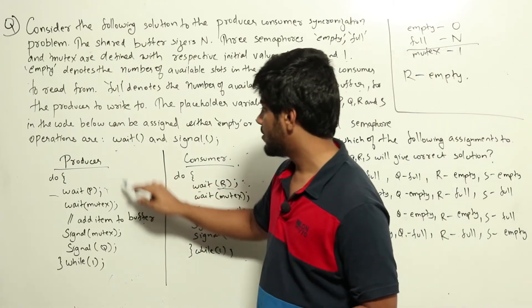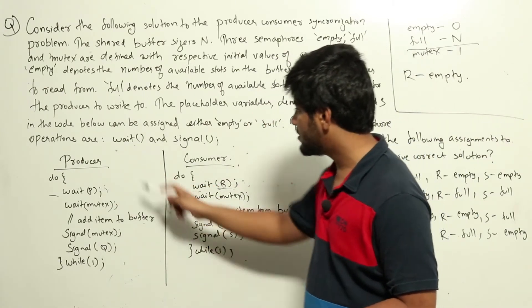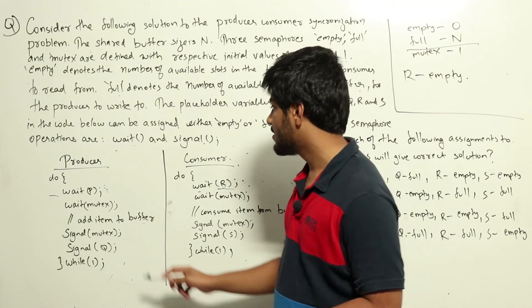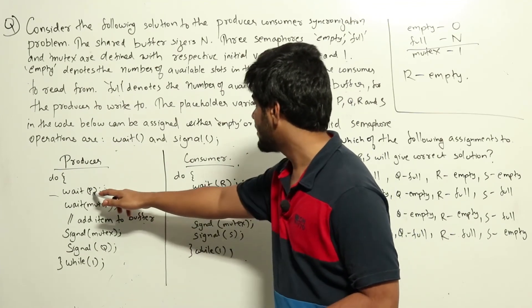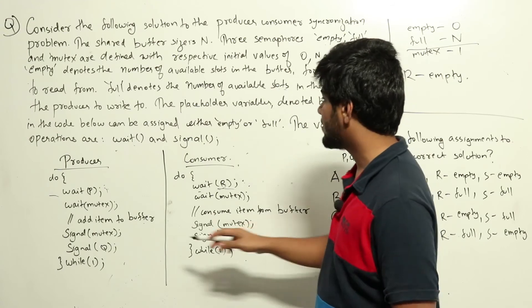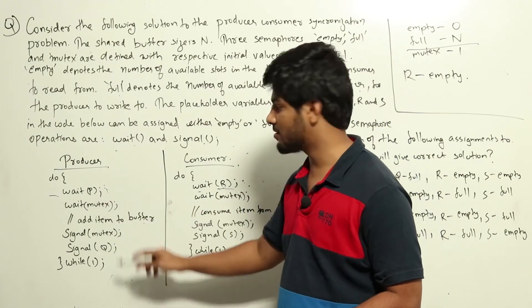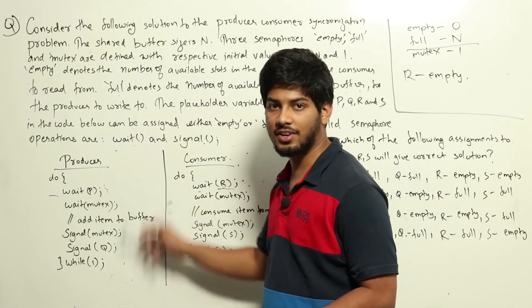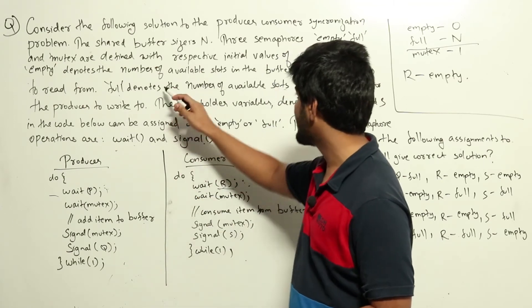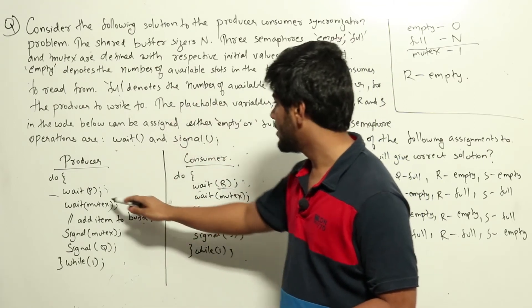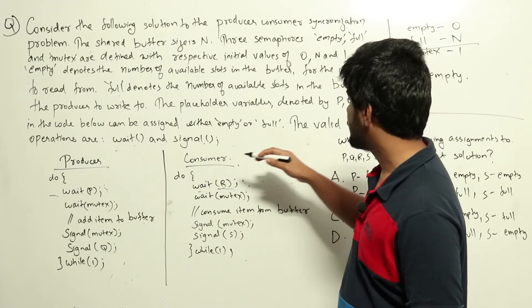Similarly, for producer, we are applying wait of P and this should go fine initially. When we are applying wait of P, if P is empty, wait of empty will come and it will be blocked. So producer won't be able to proceed further in the code. That is wrong. We have n slots available. So P should be full instead of empty.